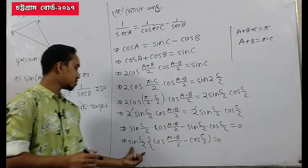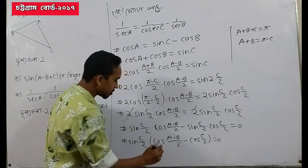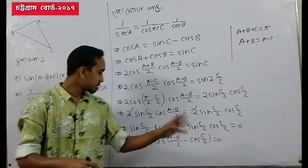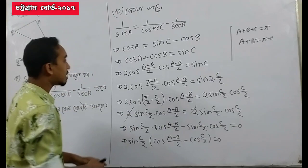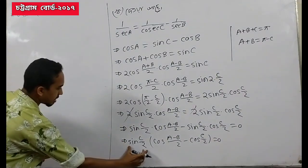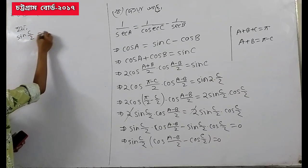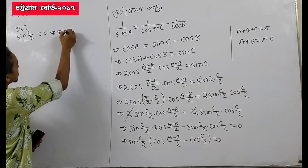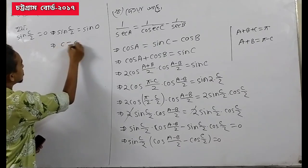We have 2 minus b divided 2 is common, and 2 minus b divided 2 is equal to 0, and we find sin c divided 2 is equal to 0. So if we hold our calculations, we have 2 equals sin(c divided 2) equal to sin 0.